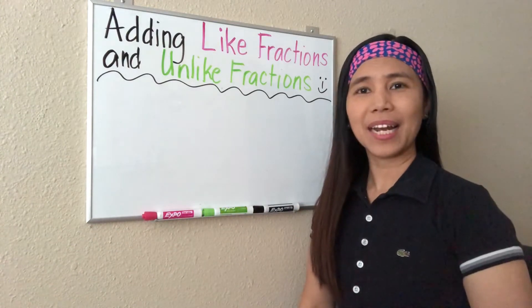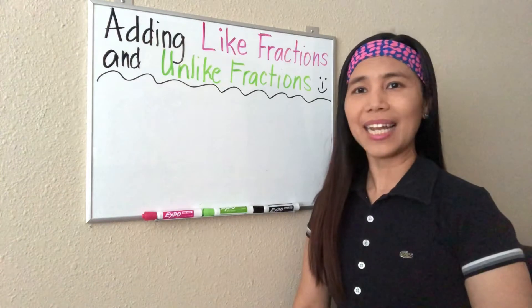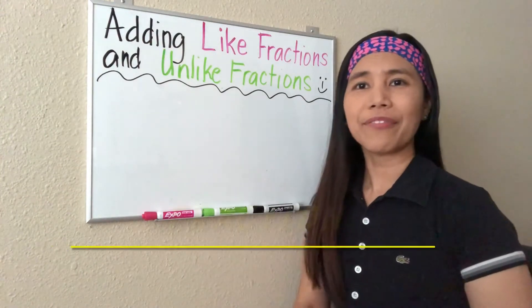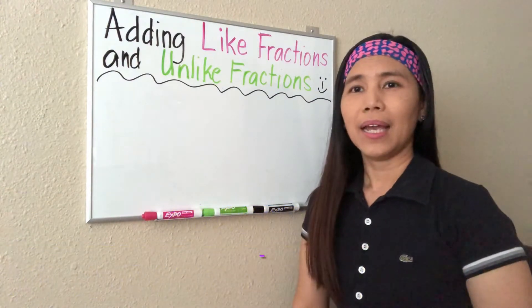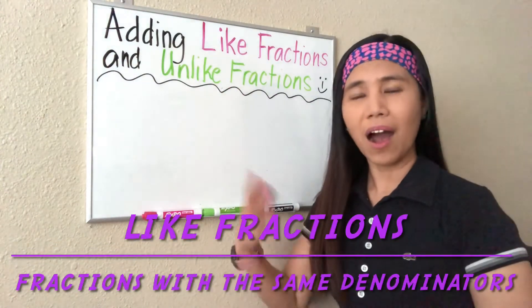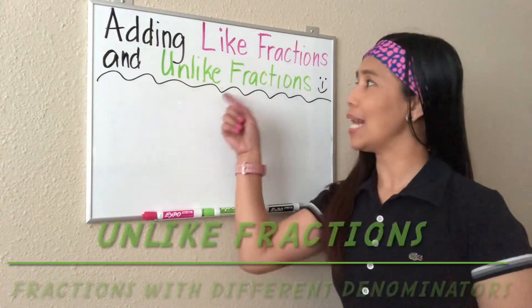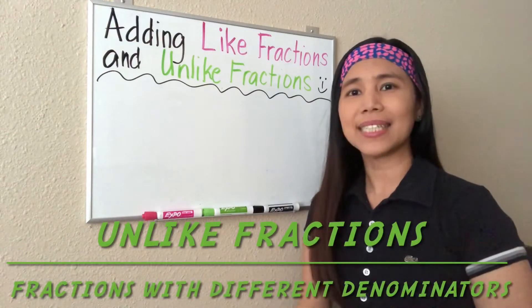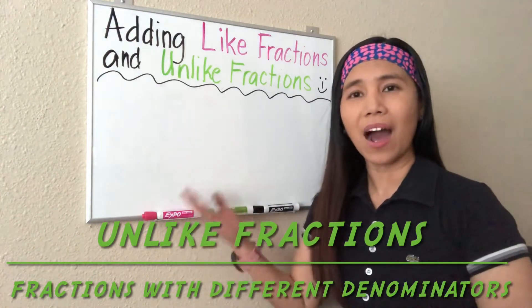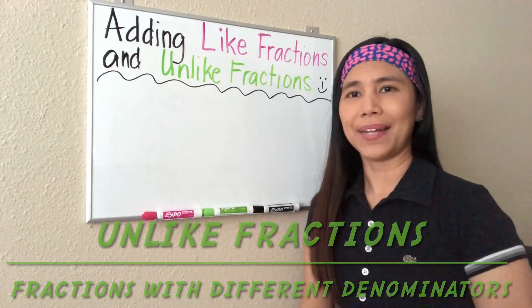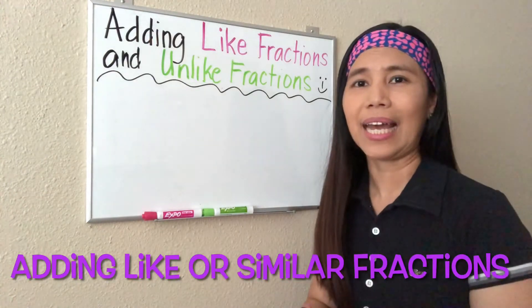Are you ready for another lesson? Let's have adding like and unlike fractions. Remember that a fraction is a part of a whole or part of a whole thing. If you say like fractions, they are fractions that have the same denominators. And unlike fractions are fractions that do not have the same denominators — they have different denominators. Let me show an example of like fractions and let's try to add them.